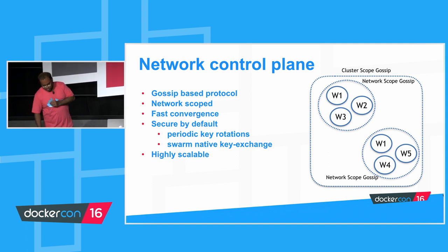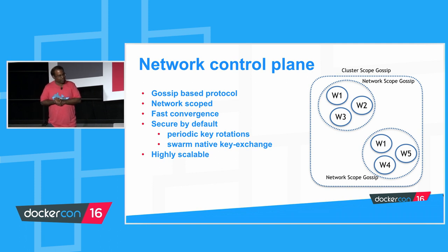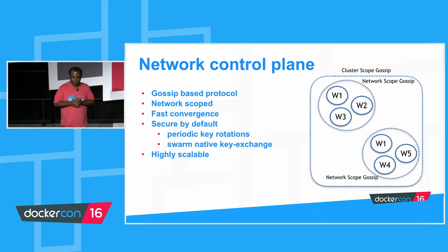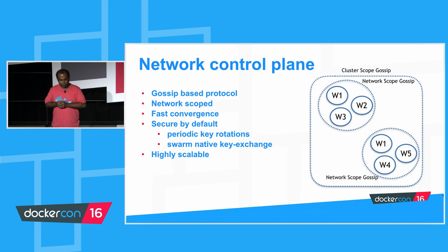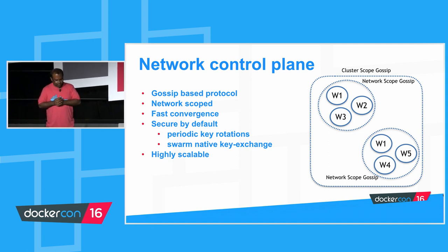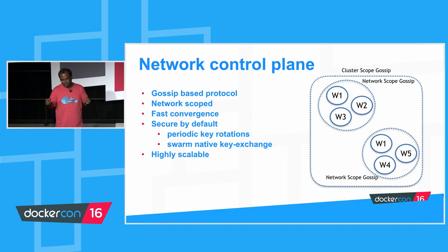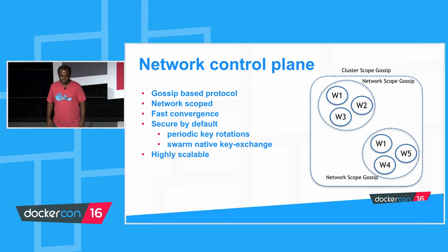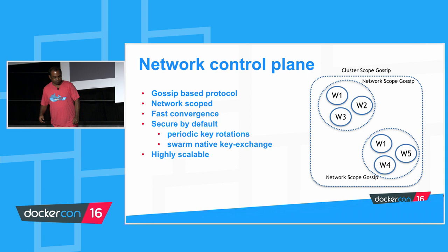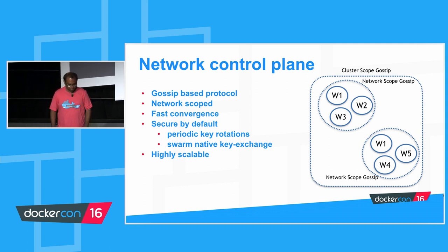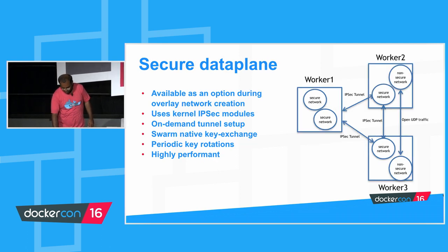Gossip provides fast convergence. Is it secure? Yes, it's secure by default. We use the swarm management system itself to do key exchange — no separate protocol needed. We have a secure, authenticated cluster discovery model, which is used to exchange the symmetric keys needed to communicate on this control plane. It's on by default, out of the box. It also supports periodic key rotation, so even if a key is compromised, keys can be rotated quickly and you can identify and remove the compromised node.